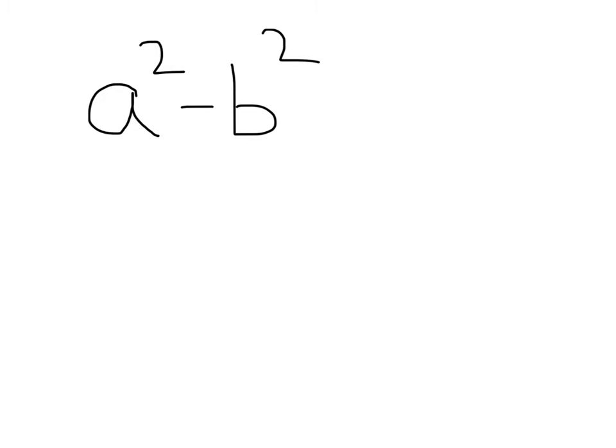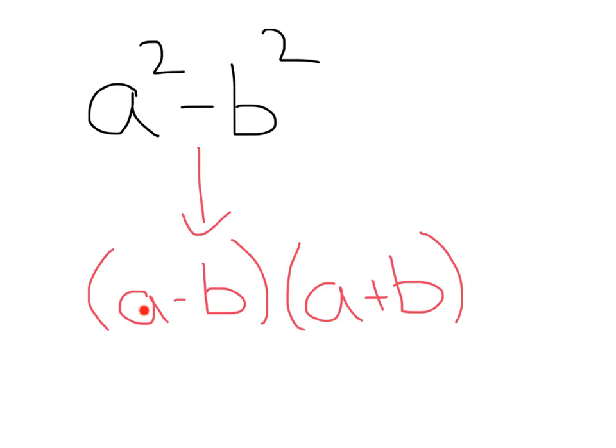Difference of squares. Here's how to factor difference of squares. Whenever you have something of this form, a squared minus b squared, that's the subtraction of two different squares, we can factor this as a minus b times a plus b.